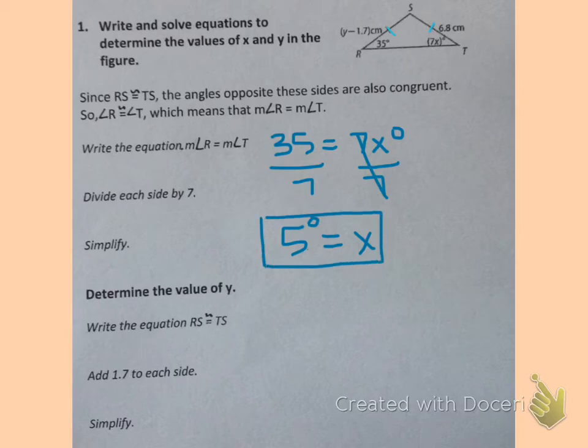And we have solved for X, but we still have to solve for the value of Y. So if we look up at the triangle again, we see Y is given to us on one of the sides. And because it's an isosceles triangle, and we see those two tick marks, we know that side RS is congruent to side TS,